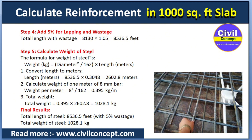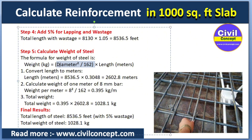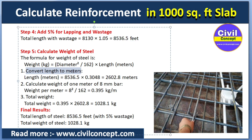Step 5: Calculate the total weight of steel. The formula is: weight of rebar = diameter squared × length divided by 162. The diameter must be in mm and the length must be in meters. Converting 8536.5 feet to meters by multiplying by 0.3048 gives 2602.8 meters. This is the total length of rebar in meters.